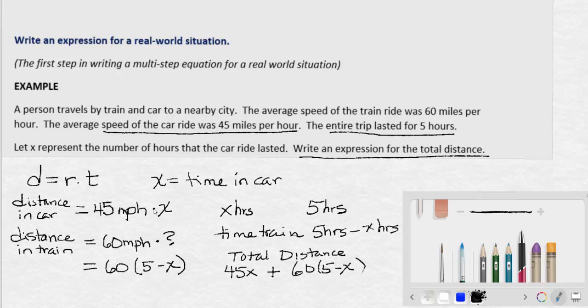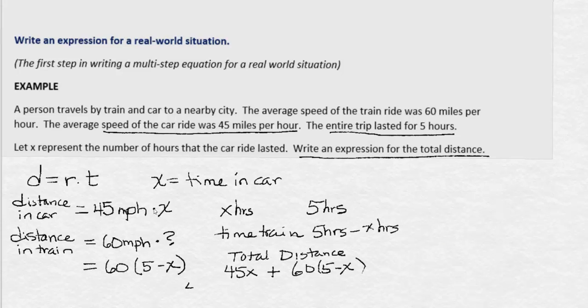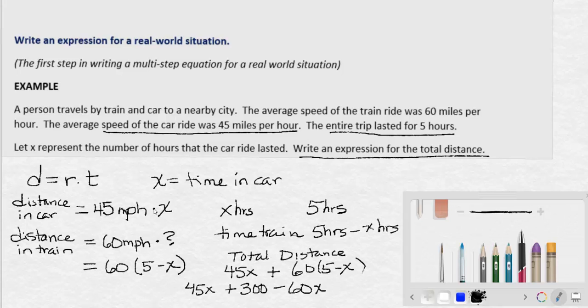We should always simplify if possible. In this case, simplifying would mean distributing 60 through the parentheses and combining like terms. This gives us 45x plus 60 times 5, which is 300, minus 60 times x. Now, 45x and 60x are like terms. We can combine them. We know this because it has exactly the same variable. This means that we have 45 minus 60 is negative 15x. So 300 minus 15x.